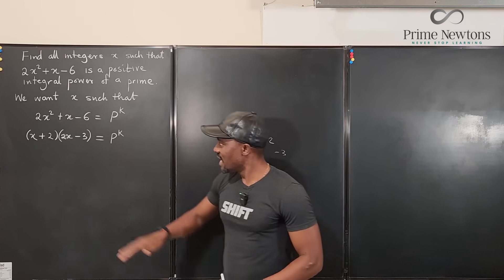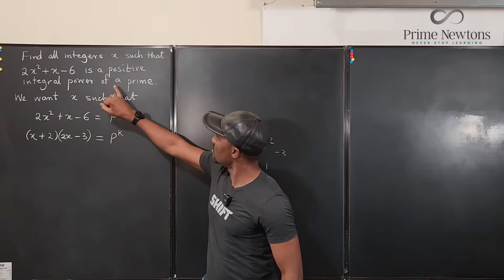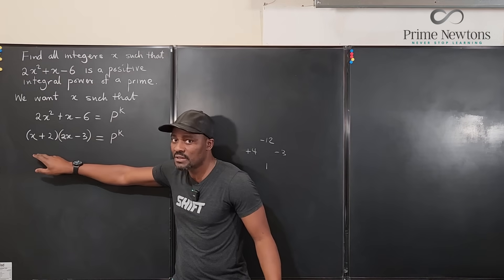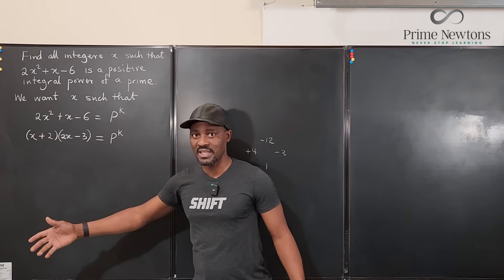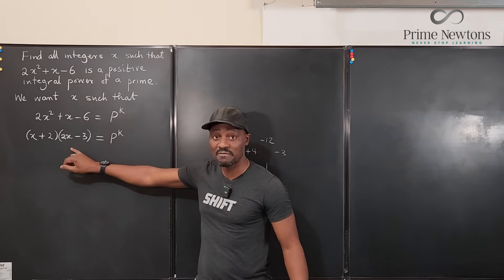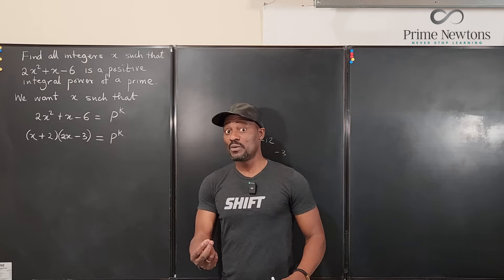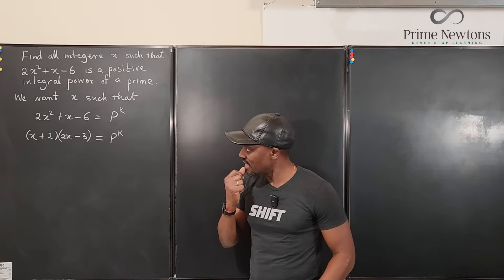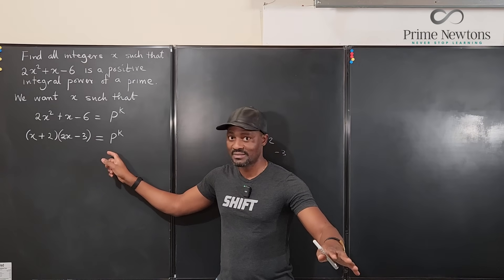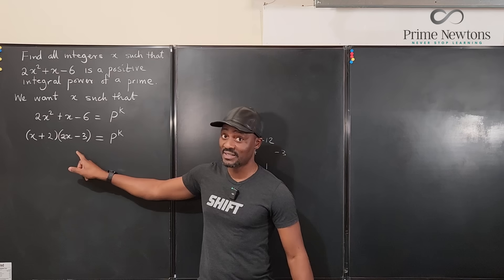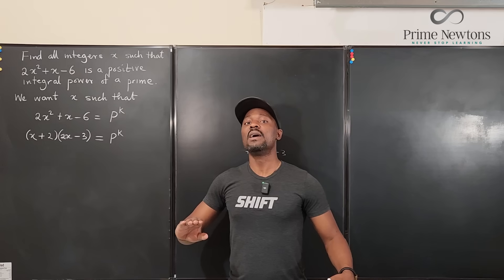So we can say: if each factor is a power of p, it does not mean they are positive. You could have negative 2 times negative 4 giving you positive 8. So the factors can be negative, but their product can still be positive. We're not looking at signs right now — we're looking at whether each factor is a power of the same prime p. This means p divides both factors, so their greatest common factor must be p or a power of p.